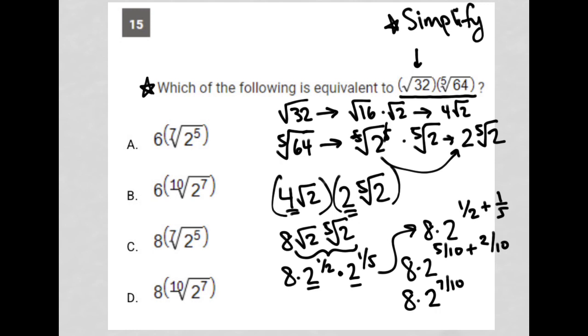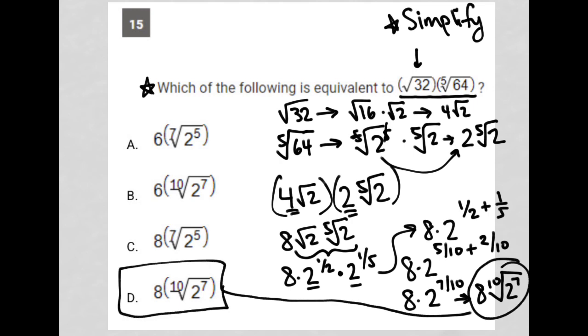Looking back at my answer choices and seeing everything's in radical form, 2 to the 7 tenths power, this becomes 8, is the same as the 10th root. This is actually 8 times the 10th root of 2 to the 7th. And that answer is right here, choice D.